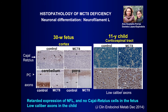The Cajal-Retzius cells are a minority of neurons present early during development in the fetus but probably not in the adult. They are present in the control cerebral cortex but not in the MCT8 fetus. These cells are involved in the migration of cells from the ventricular layer to form the layers of the mature cortex. Deficiency of these cells leads to an altered cerebral cortex structure with not well-defined cortical layers.